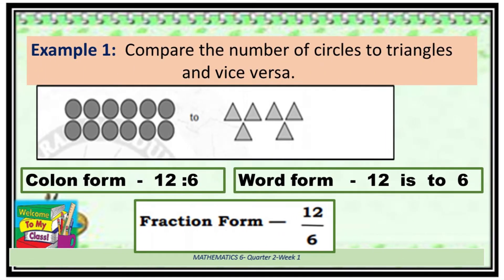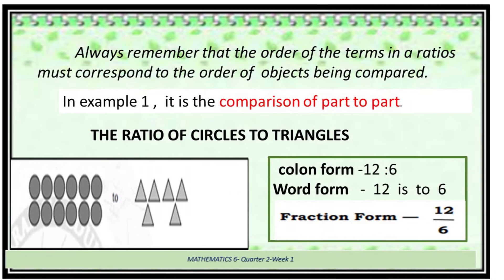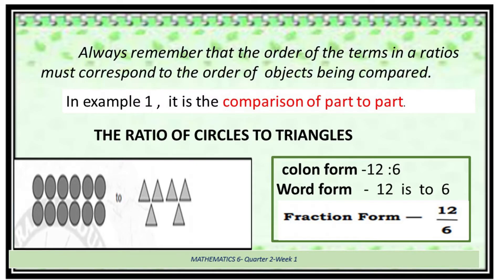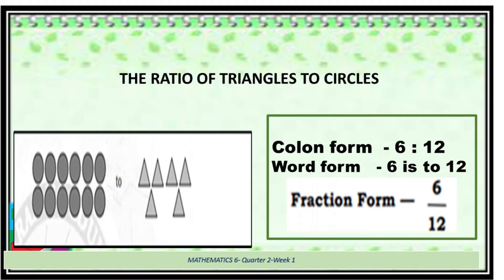Let's take a look at these examples. Compare the numbers of circles and triangles and vice versa. To compare the number of circles to triangles, it should be written in colon form. It has a colon symbol, and we write this as 12 is to 6. Another way of writing this ratio is word form. Ratios can also be interpreted as fraction form — even in fraction form, you still say 12 is to 6. Always remember that the order of terms in a ratio must correspond to the order of objects being compared. In example 1, it is a comparison of part to part: the ratio of circles to triangles is 12 is to 6, and the ratio of triangles to circles is 6 is to 12.